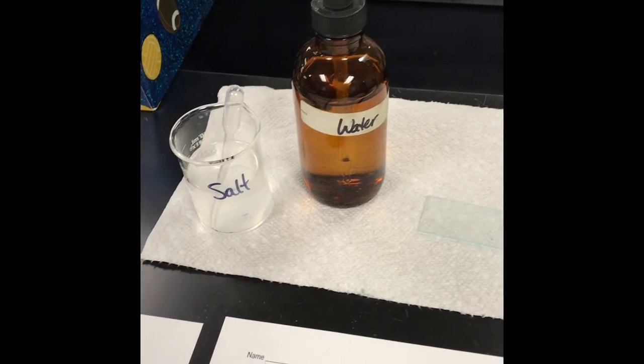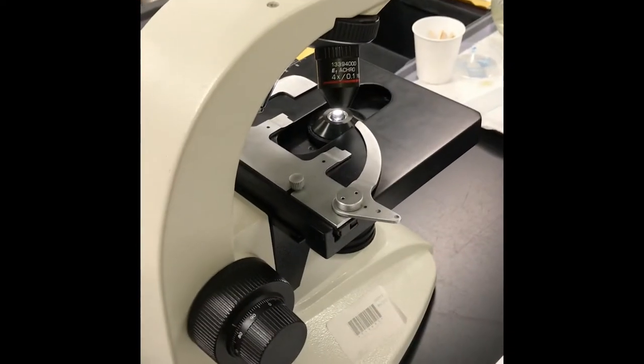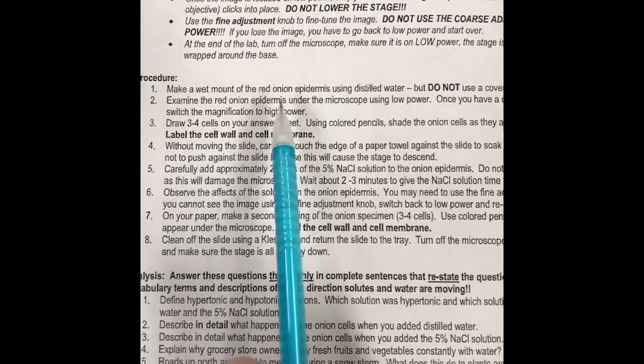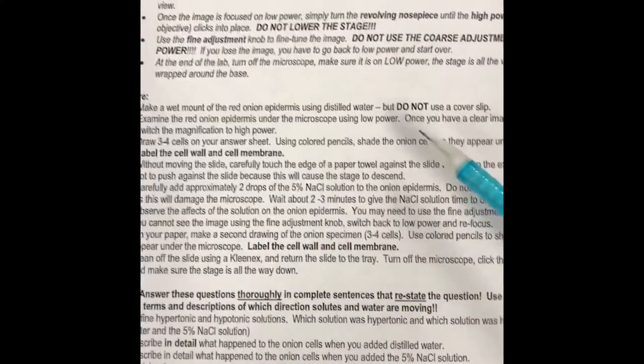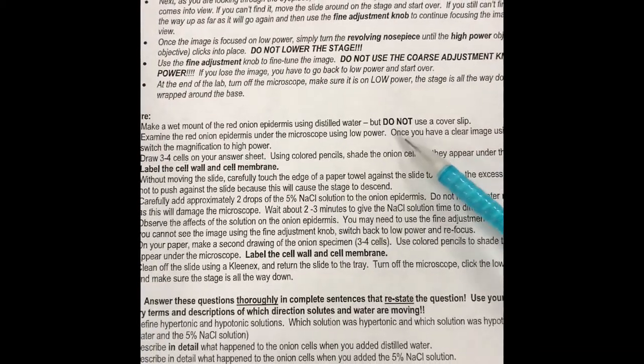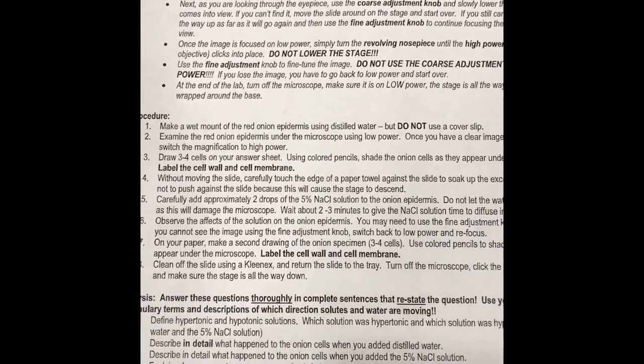The first thing we're going to do is start at step number one. We're going to make a wet mount of our red onion epidermis using distilled water, but we're not going to use a cover slip because we want to see this in action. If we put a cover slip, we won't be able to use salt water right after.